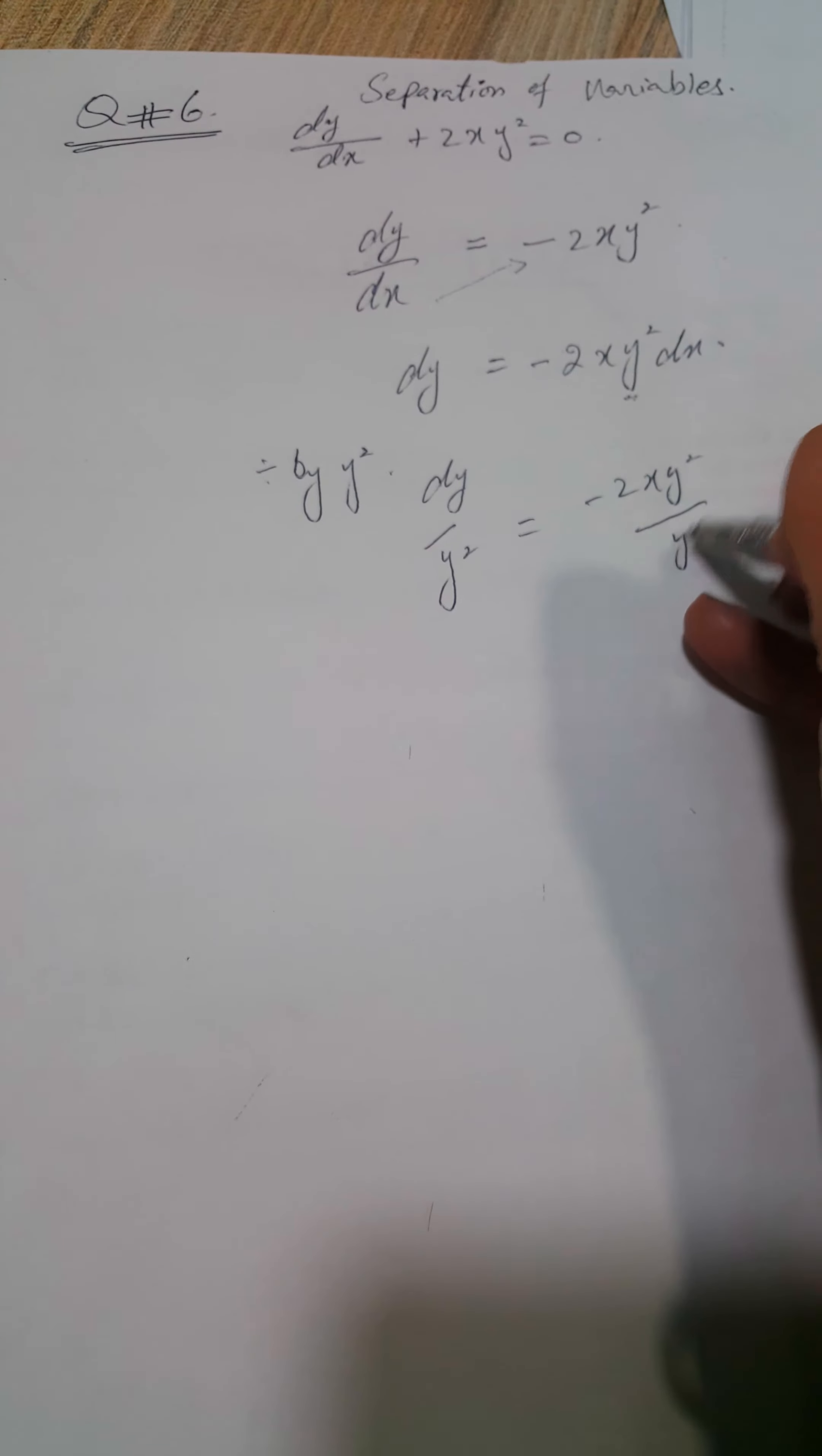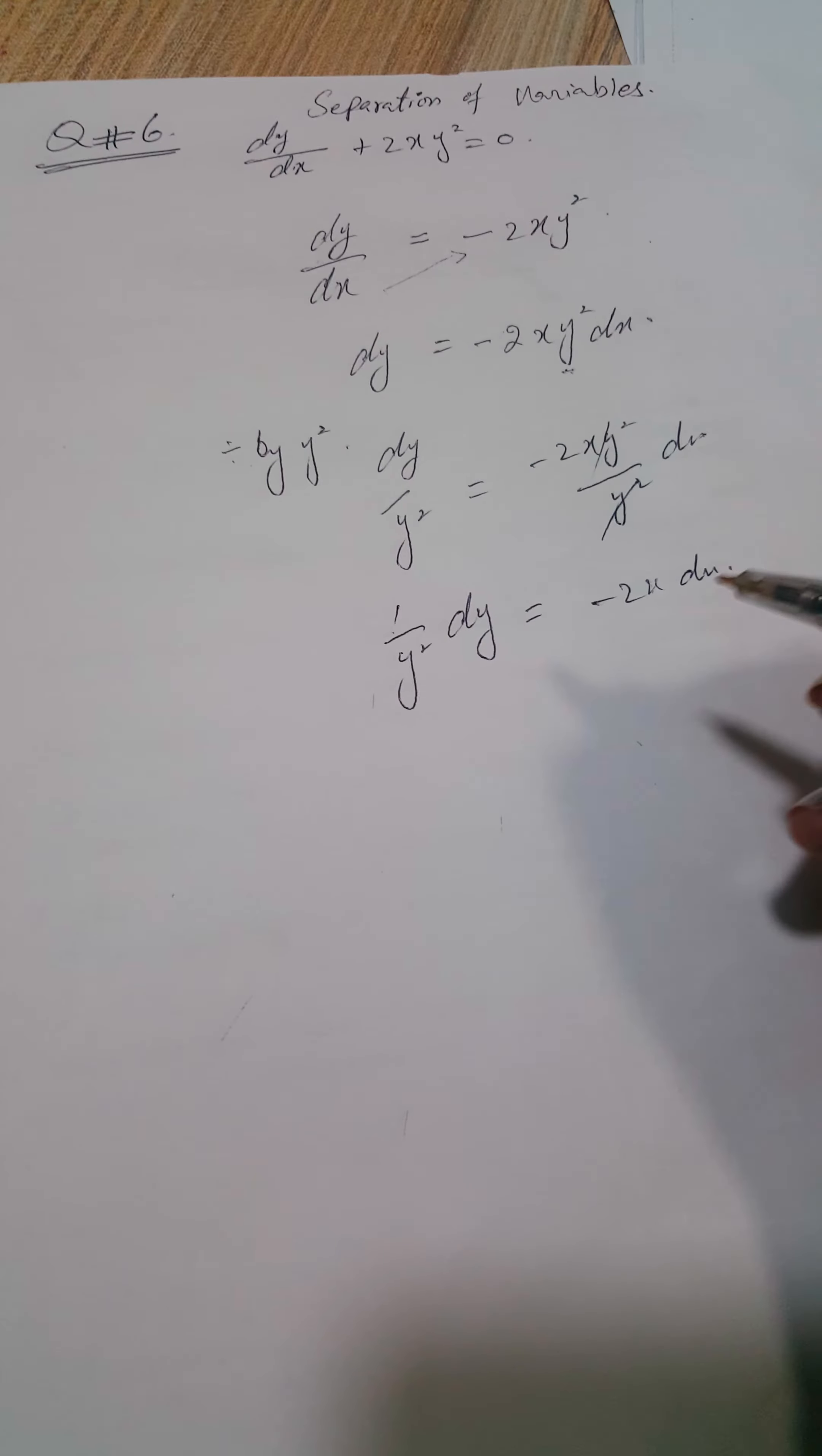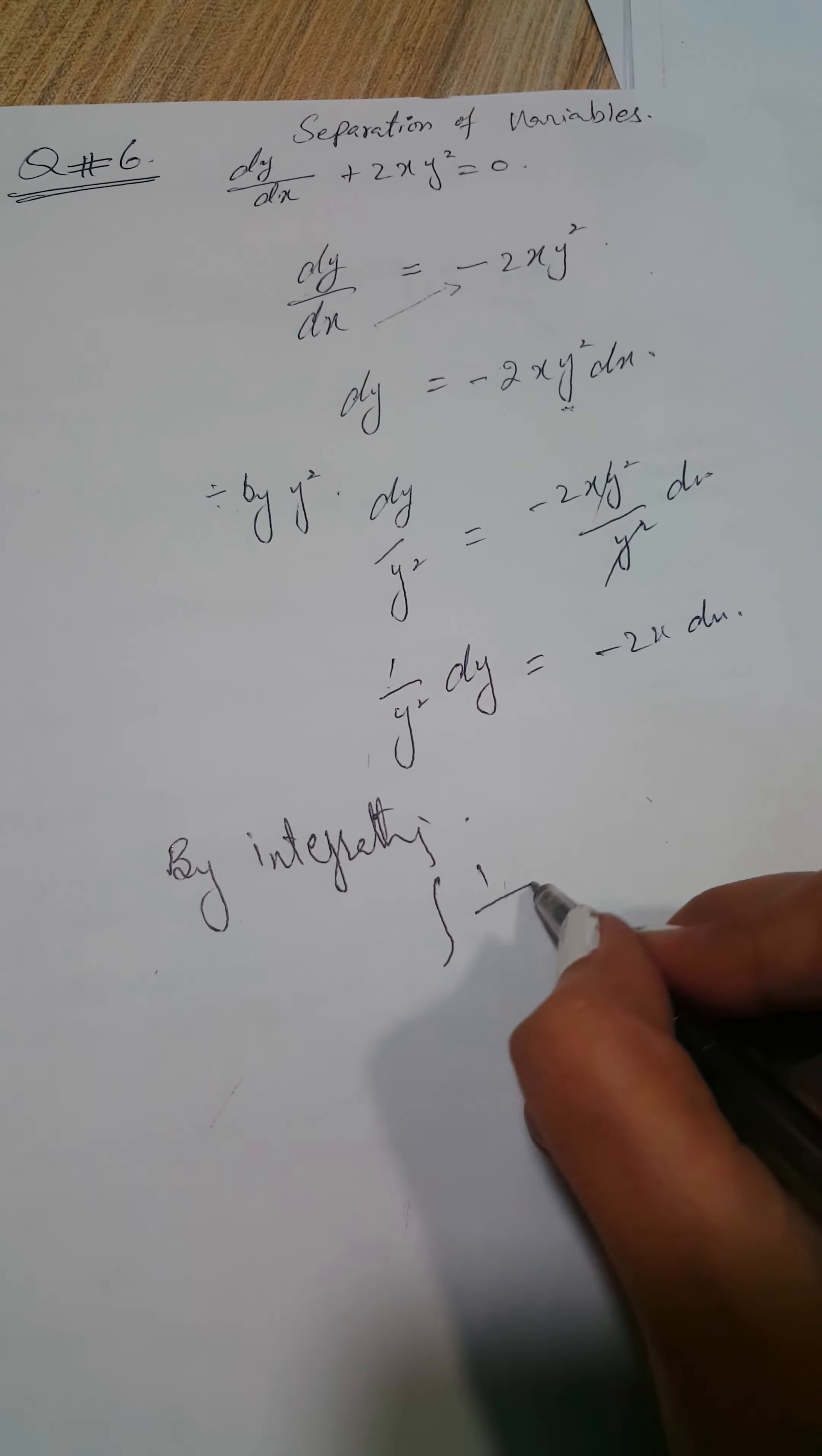I get the values: 1/y² dy = -2x dx. Now by separation rule integration, I have to integrate. By integrating: ∫(1/y²) dy = ∫(-2x) dx.